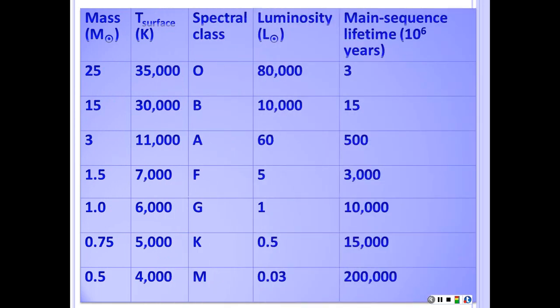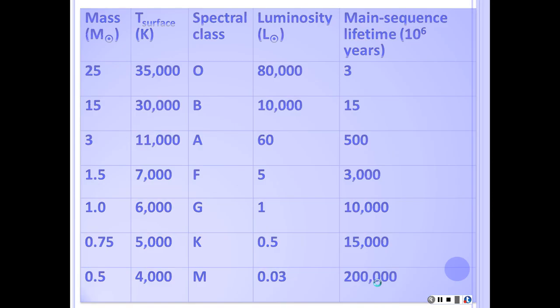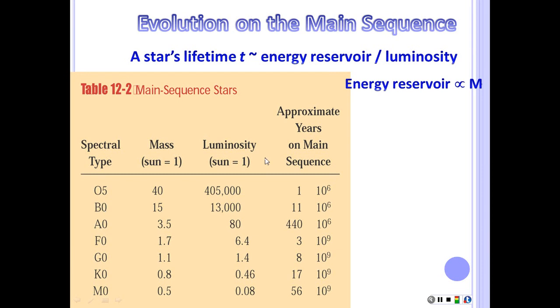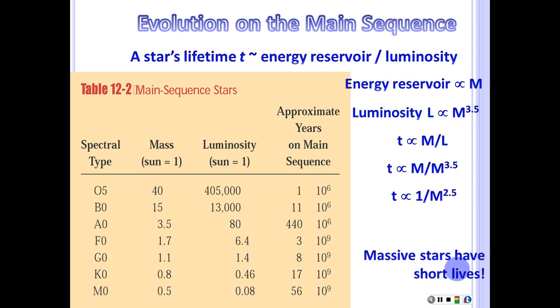Okay, and so remember, we talked about how the lifetime on the main sequence depends on the luminosity and the mass. So 25 solar masses, 80,000 solar luminosities, is only going to last 3 million years, whereas a solar mass star lasts 10 billion years, and a half solar mass star lasts 0.2 trillion years. And this is just another view of that in terms of spectral type. Okay? And remember, we've got the amount of energy we have available is given by M, and the luminosity goes as M to the 3 halves. So remember that our lifetime is 1 over M to the 2.5. We looked at that when we were talking about stellar masses. And so massive stars have very short lives, you can see there, the O star is only going to live for 1 million years, and the B star is about 10 million years, and the very low mass stars have very long lives.